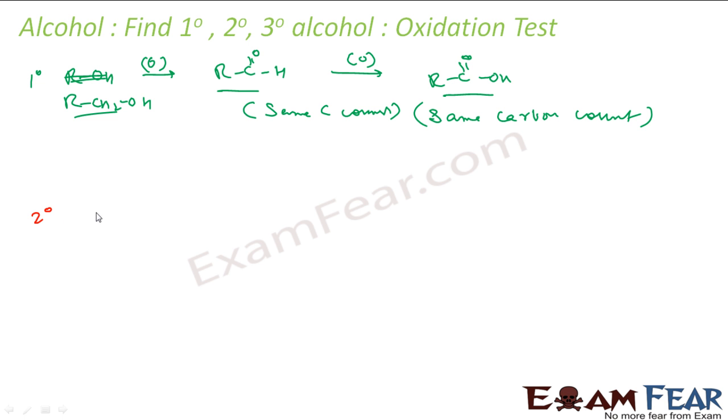Let's do it for 2 degree alcohol. So let's suppose I have something like this. If I do oxidation, I get something like this, that is my ketone. This will also have same carbon. But if you see it is a ketone now. This was my aldehyde, this is my acid, this is a ketone. Do further oxidation...